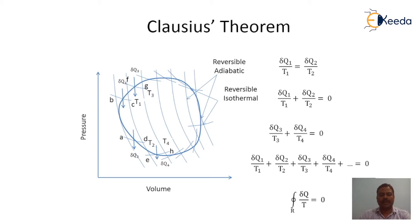The subscript R in the equation emphasizes the fact that this equation is valid only for reversible cycles. That is about Clausius theorem.